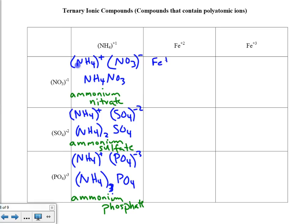Fe⁺² is paired up with NO₃⁻¹. Crisscrossing, we get Fe(NO₃)₂. The name of this substance is iron 2 nitrate — remember, the Roman numeral 2 implies that this is the plus 2 ion.